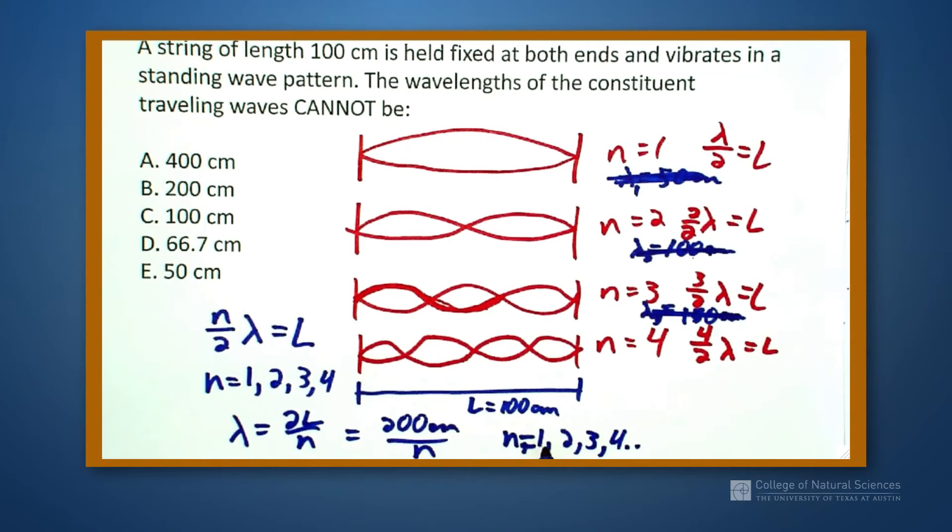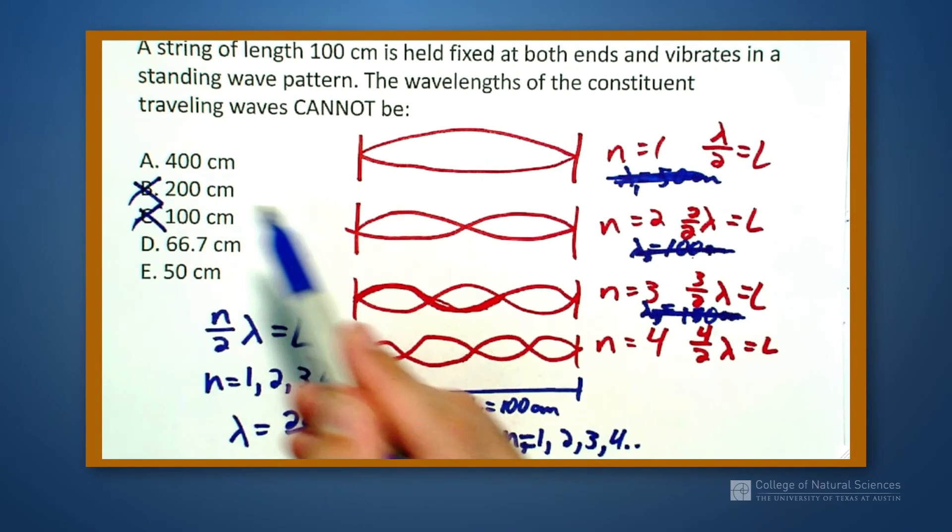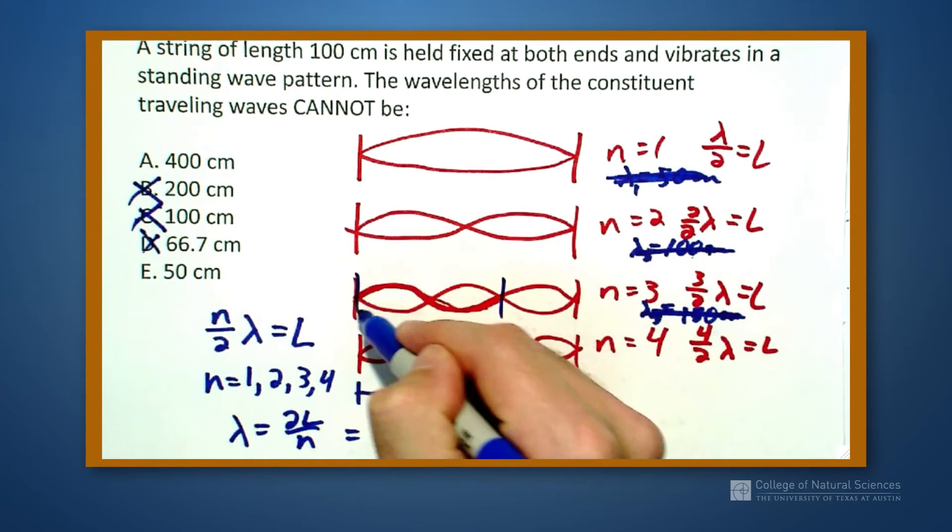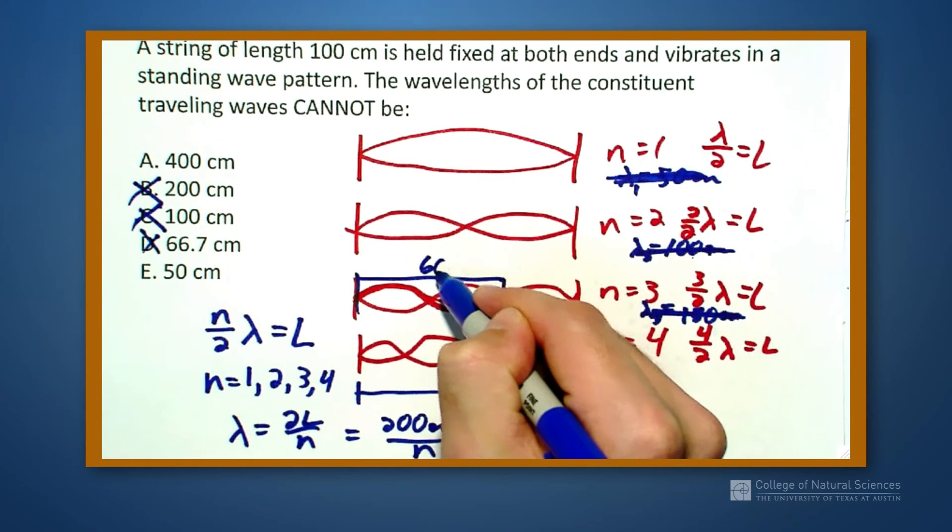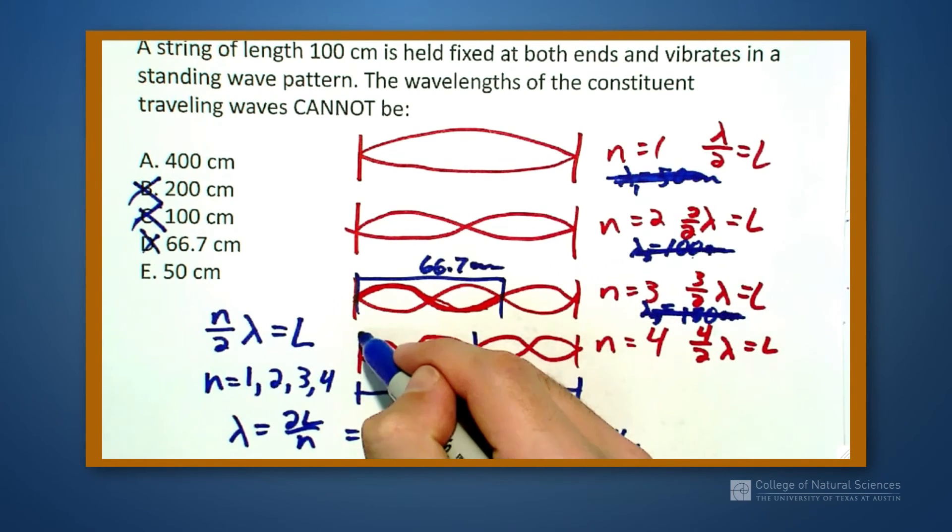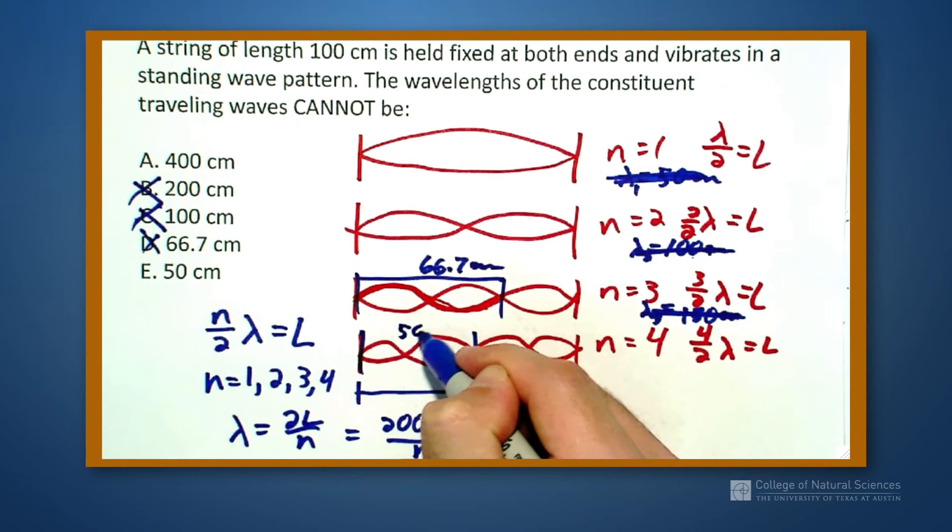Alright, so 200 divided by 1 is 200, well that's possible. 200 divided by 2 is 100, 200 divided by 3 is 66.7, that would correspond to this guy. This is 66.7 centimeters. 200 divided by 4 is going to be this length, this is going to be 50 centimeters.